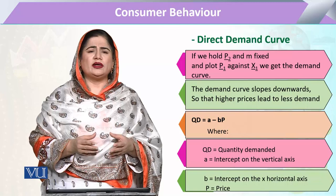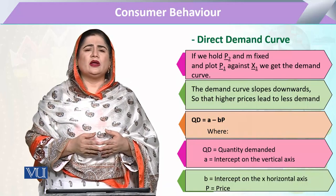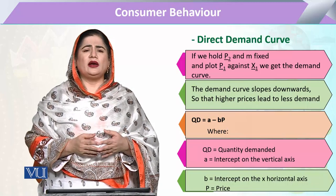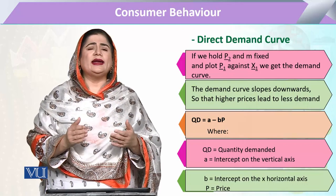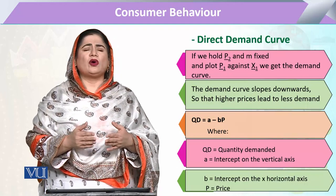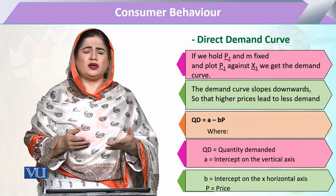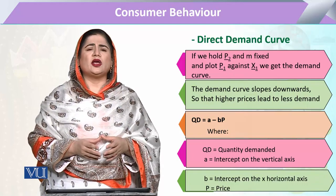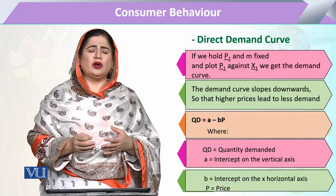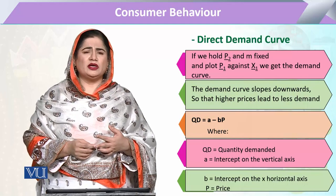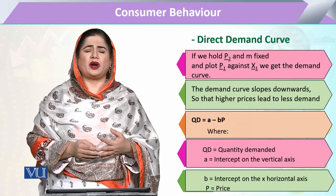When we write the quantity demanded of a commodity in equation form, we write that it is a function of price P, and it is an inverse function of P. To show inverse, we always attach a negative sign. So we write: quantity demanded of any commodity equals a minus BP, where B is the parameter or coefficient of the price. To make it a complete equation we add the constant, so: Qd = a − bP, where 'a' is the intercept and 'b' is the slope reflecting the change in quantity demanded with respect to change in price. That is our direct demand curve.